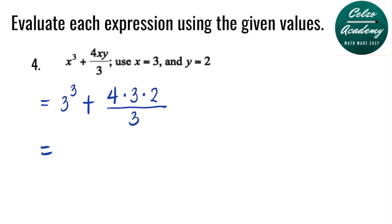3 to the 3rd power means you multiply 3 by itself 3 times. So 3 times 3 is 9, and 9 times 3 is 27. So 3 to the 3rd power is 27. Plus, we simplify 4 times 3 times 2 all over 3: 4 times 3 is 12, 12 times 2 is 24, and 24 divided by 3.